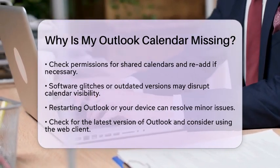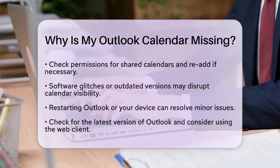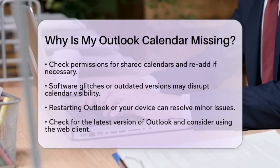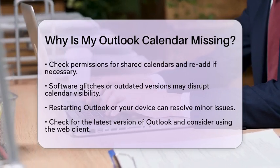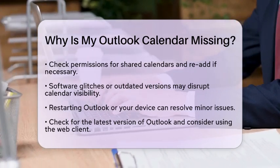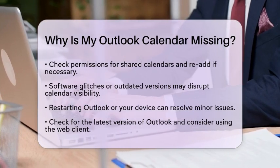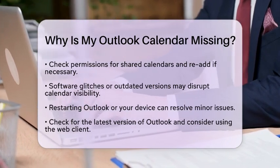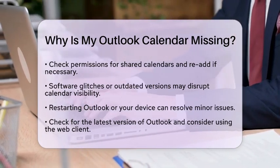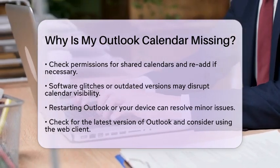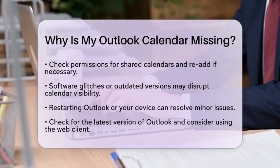Sometimes configuration or view settings can hide your calendars. In the Outlook desktop app, navigate to the View tab, select Change View, and reset to the default layout. Make sure the calendar pane is enabled in your settings.